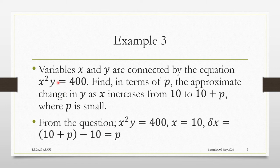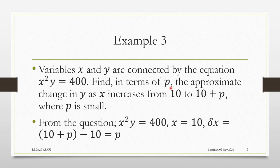Get your data from the question. From the question, we know that x²y = 400. We know that x started from 10. We know that the small change in x, delta x, is (10 + p) − 10, giving us p. And what they want us to find is the small change in y, which is delta y.